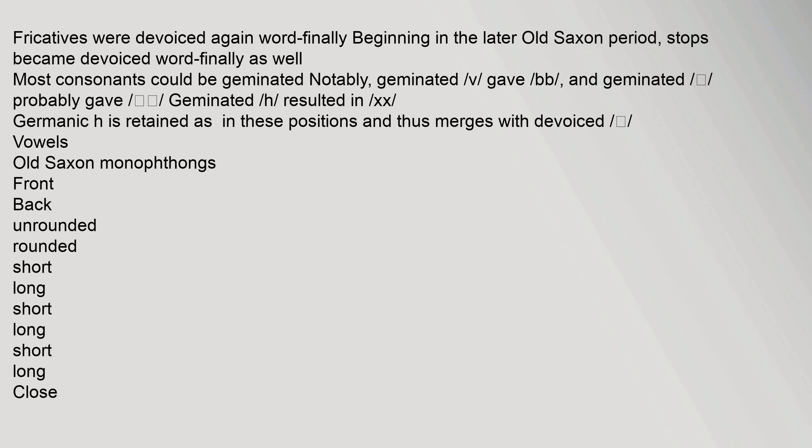Fricatives were devoiced again word-finally beginning in the later Old Saxon period; stops became devoiced word-finally as well. Most consonants could be geminated; notably, geminated v gave bb, and geminated theta probably gave dd. Geminated h resulted in x/x, and Germanic h is retained in these positions and thus merges with devoiced consonants.